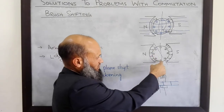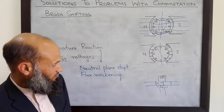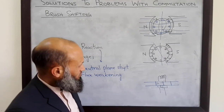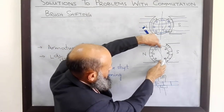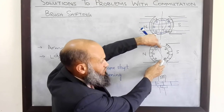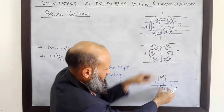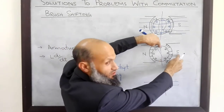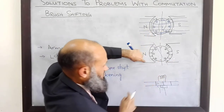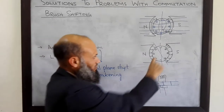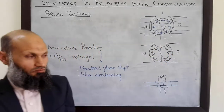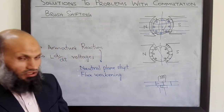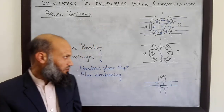However, due to armature reaction, this neutral plane has shifted. We were assuming that no voltage would be induced in the coil being shorted. Now, this conductor is under the influence of the south pole and this conductor is under the influence of the north pole. So in both conductors, voltage will be induced, and shorting the two ends of this voltage source will be problematic.